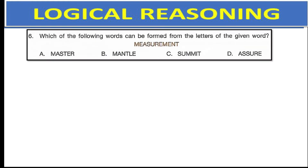Which of the following words can be formed from the letters of the given word 'measurement'? All you need to do is find the spelling which has a letter not present in 'measurement' — that letter is L. Option B, 'mantle,' cannot be created from the word 'measurement,' so that is the right answer.